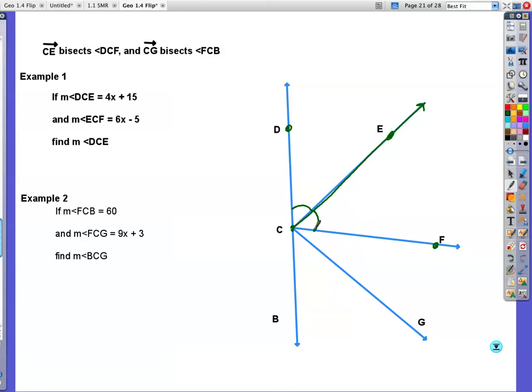It also tells me in the instructions here that ray CG, which is this one down here, there's your ray. It bisects angle FCB, which means this angle, and I'm going to put two markings because I'm going to set it apart from this one, is congruent to this angle. So as soon as you see bisect, that's about the next thing you should be writing down.